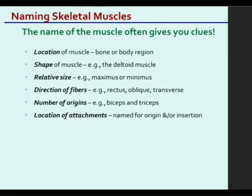Sometimes muscles are named by their location or shape — like the deltoid, which is in a triangle shape like a delta symbol. Or they're named by size, like glute max, which is bigger than the glute minimus. These are just little things to help you along the way; I'm not going to test you on this specifically, but it's useful context as we learn.